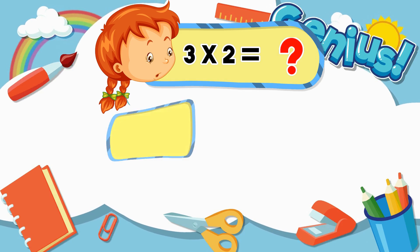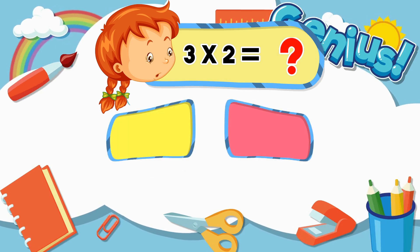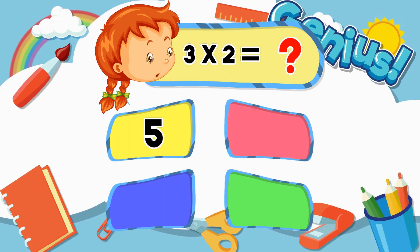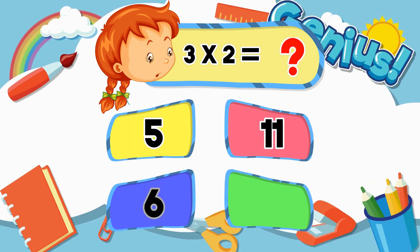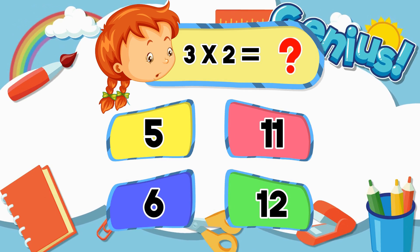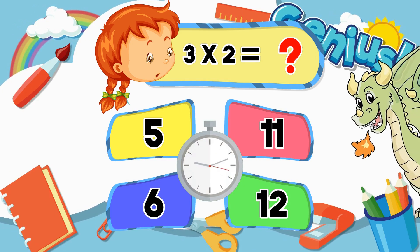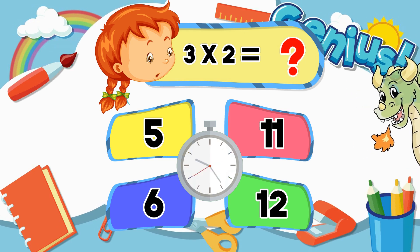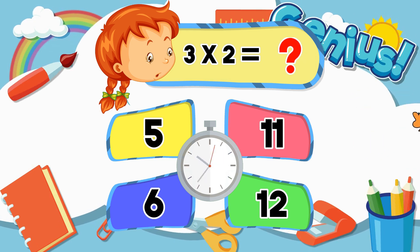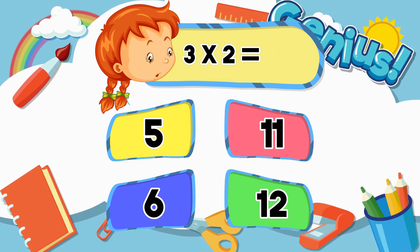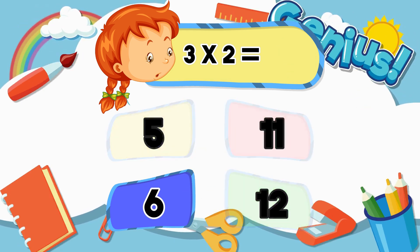What is three times two? Two, five, eleven, six, twelve. Six.